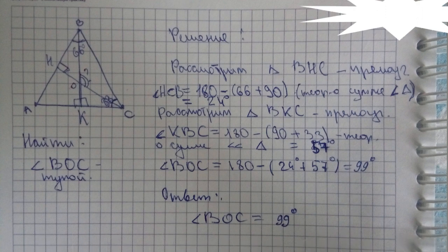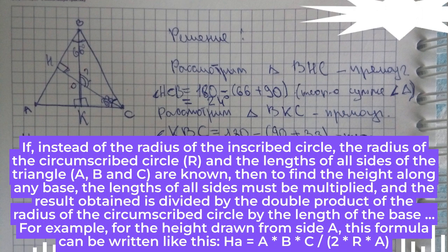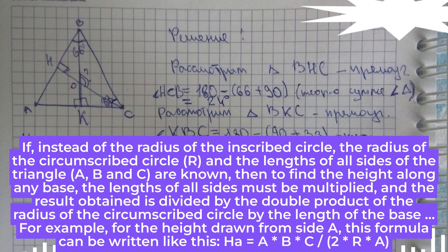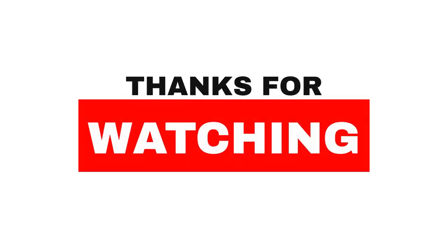Step 5. If, instead of the radius of the inscribed circle, the radius of the circumscribed circle, R, and the lengths of all sides of the triangle, a, b, and c, are known, then to find the height along any base, the lengths of all sides must be multiplied, and the result obtained is divided by the double product of the radius of the circumscribed circle by the length of the base. For example, for the height drawn from side a, this formula can be written as: ha = (a * b * c) / (2 * R * a). Thanks for watching.